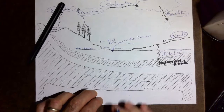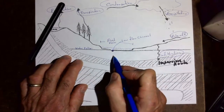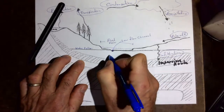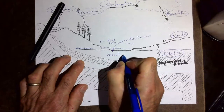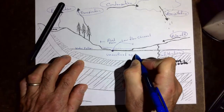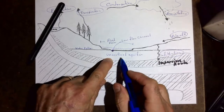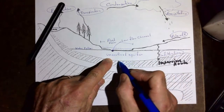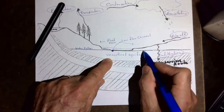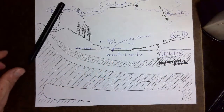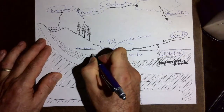The water table is the top of this aquifer. This is called an unconfined aquifer. An unconfined aquifer is unconfined — it has a definite bottom but it doesn't have a definite top, because the water table can fluctuate going up or down.